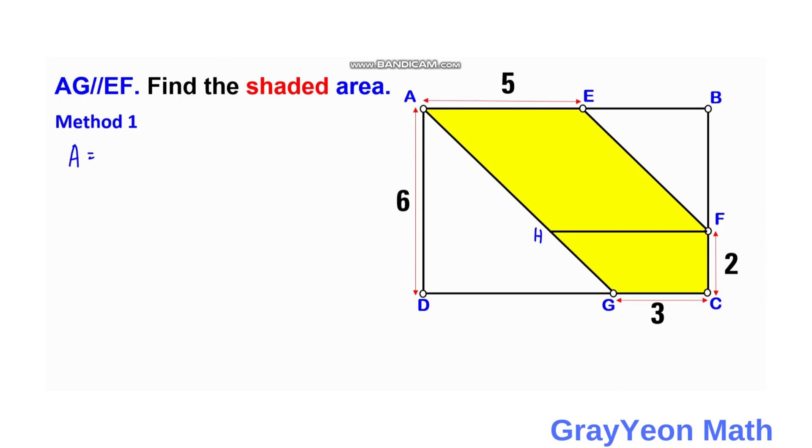We see that since this is a parallelogram, this H, F becomes 5 also. And this B, F, the height of the parallelogram is simply 6 minus 2 and this becomes 4.